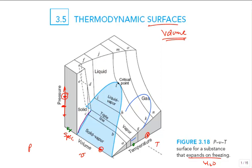The solid region is also an extremely steep surface. As I try to decrease the volume, pressure goes way up — solids are very incompressible. So there are our three phases: vapor or gas, liquid, and solid.